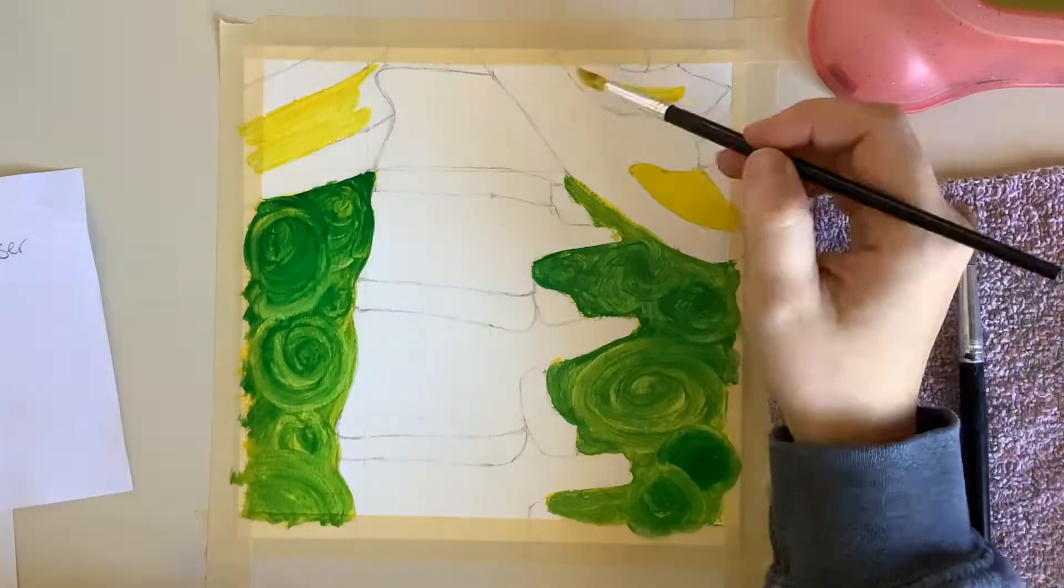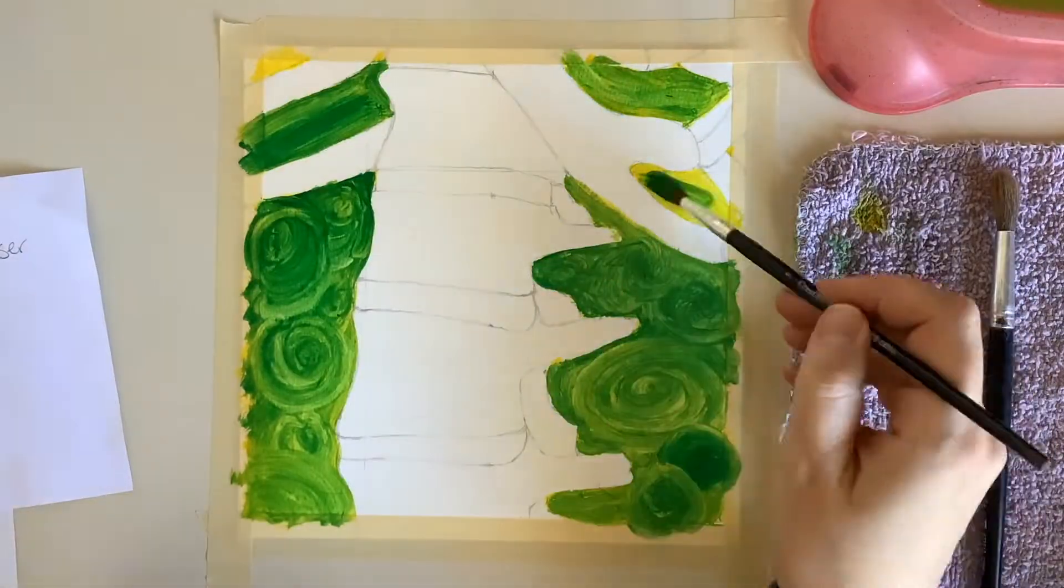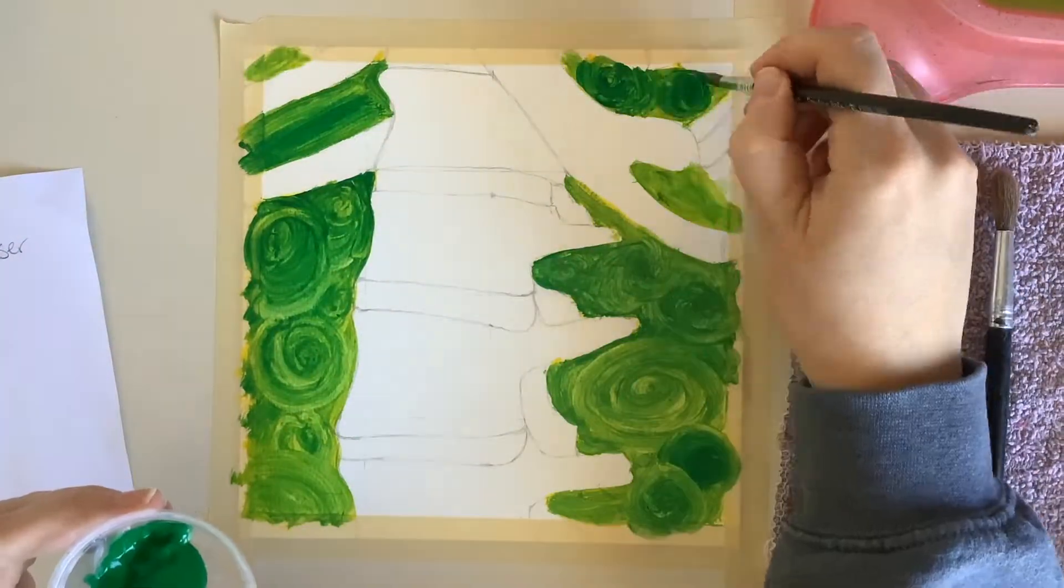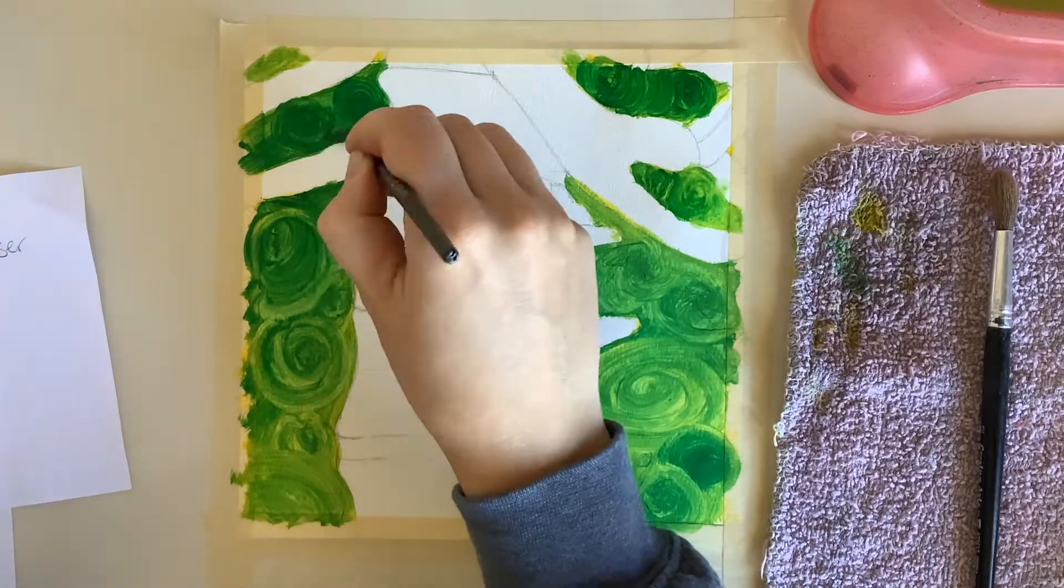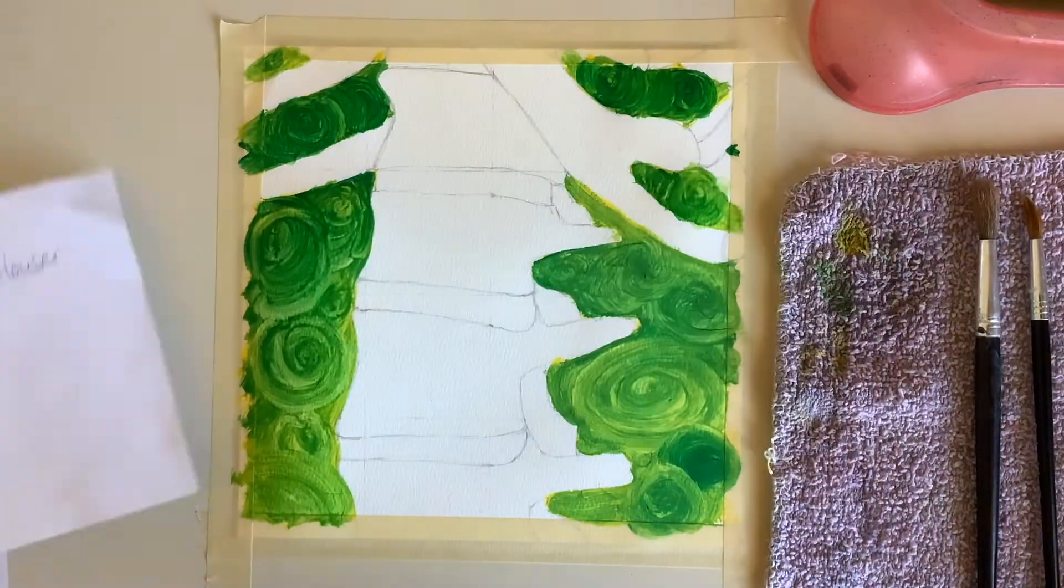When I go to grade it, I'm looking for two very specific things. I'm looking at whether or not you layered your paint, exploring color theory, and the second thing is your composition. Is it distracting or does it actually help and support your overall project?